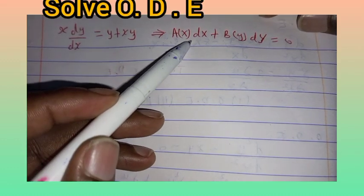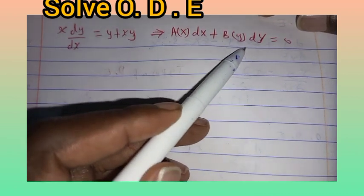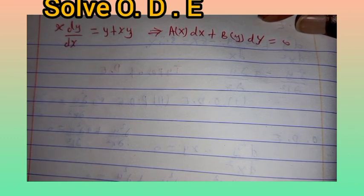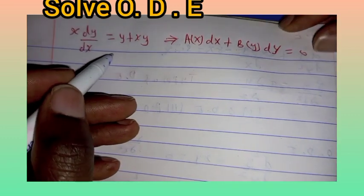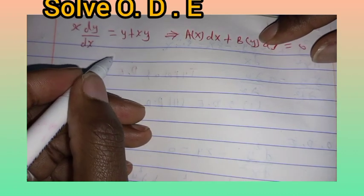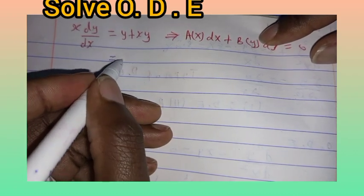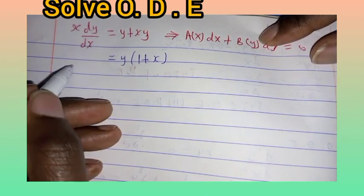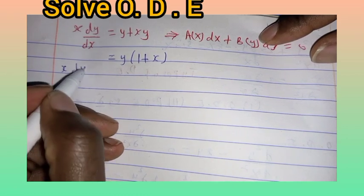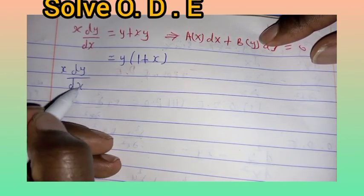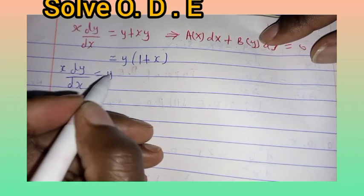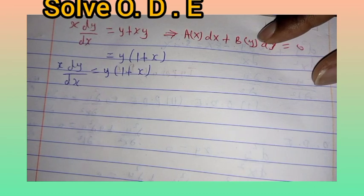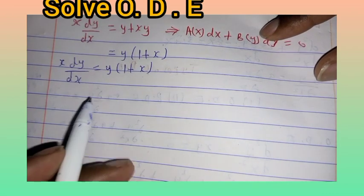We are going to write it in the form of a(x)dx plus b(y)dy equals zero. To do that, on the right-hand side we can factor y, giving us y times (1 plus x). So x dy/dx is equal to y times (1 plus x).